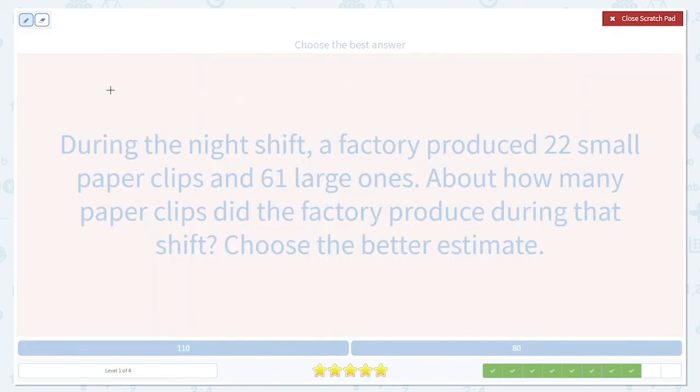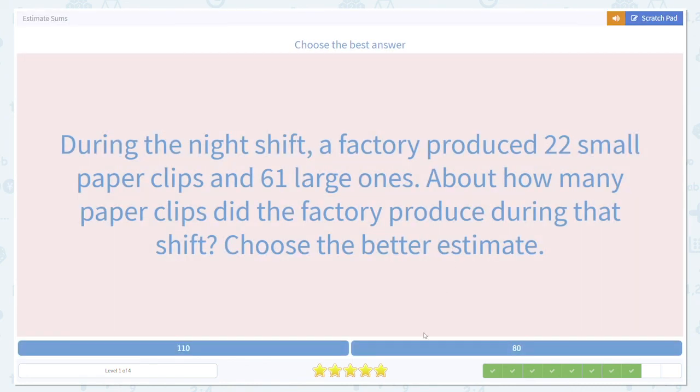Once again, we want to find an estimate for our sum 22 plus 61. 22 is going to round down to 20. 61 is going to round down to 60. And then 20 plus 60 is just 80. 80 paperclips. About. A little more, a little less. Not a big deal. It's about 80.